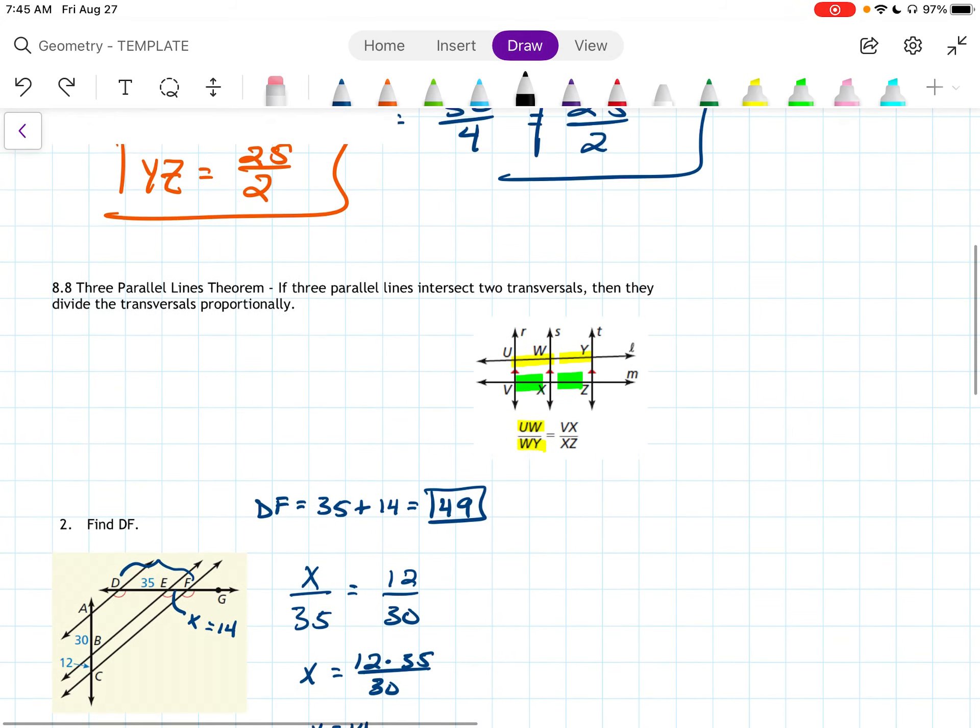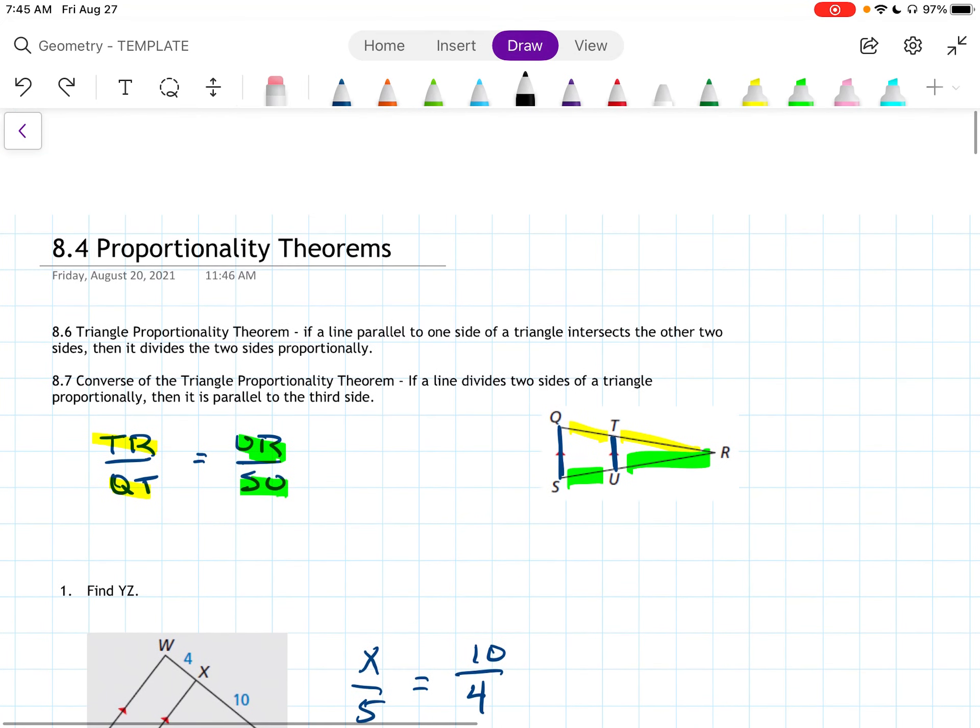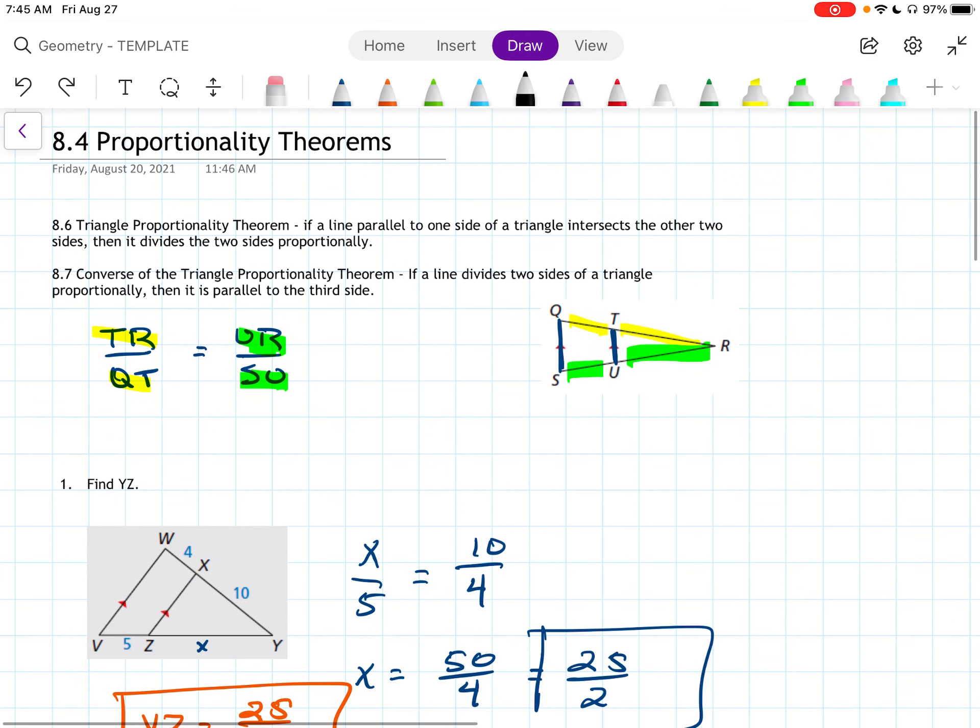So make sure that you have all of these theorems written down, right? How many are there? There's four total, but really there's only three, because two of them are converses. All right. So good luck on your homework, and let me know if you need any help.